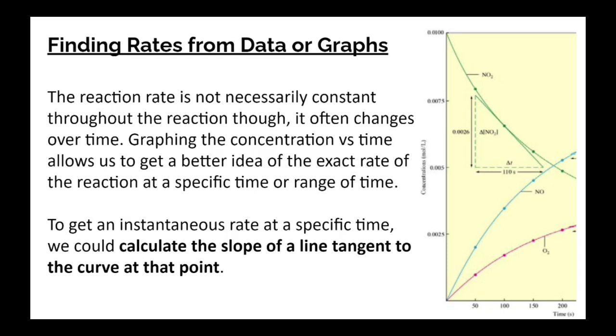To get what's called an instantaneous rate at a specific time, we could calculate the slope of a line tangent to the curve at a point, like what they've done here. They've chosen a point here and they've drawn a tangent line here, which just touches the curve at the same slope of the curve at that point. And then we can take the slope of that. So rise over run in order to calculate the instantaneous rate at that specific time.